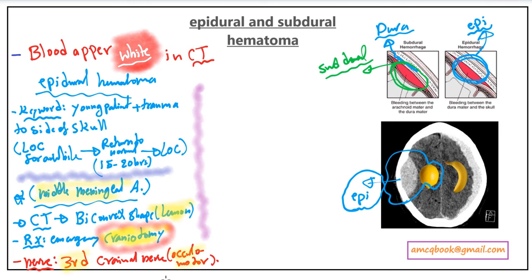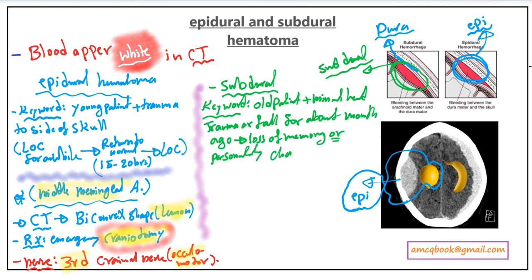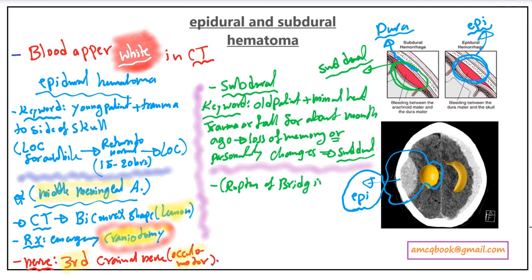For subdural hematoma, the keyword scenario is an old patient with minimal head trauma or a fall about one month ago, now presenting with loss of memory or personality changes. This leads to rupture of the bridging veins — that's important. On CT scan, it appears as a concave crescent shape, like a banana.